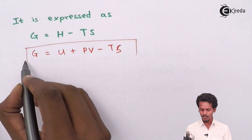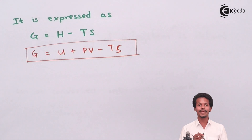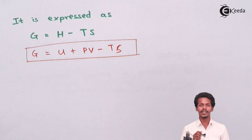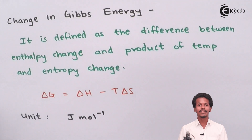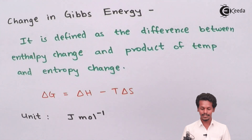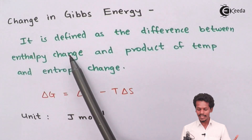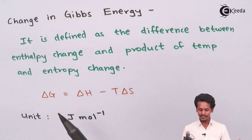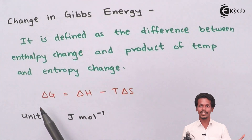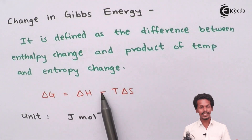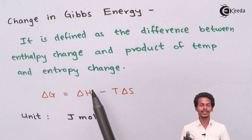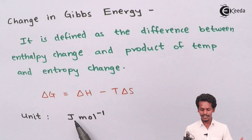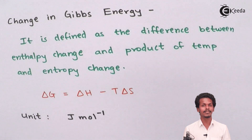Gibbs free energy alone is not sufficient to describe reaction spontaneity. We also need to understand Gibbs free energy change. The change in Gibbs energy is defined as the difference between the enthalpy change and the product of temperature and entropy change: ΔG = ΔH − TΔS. The unit of Gibbs free energy change is joules per mole, or kilojoules per mole.